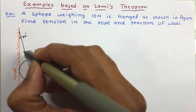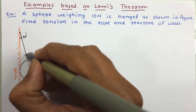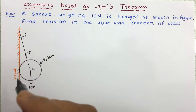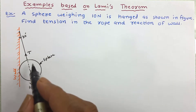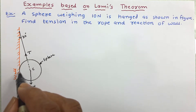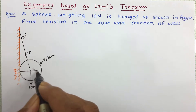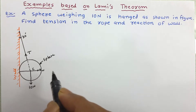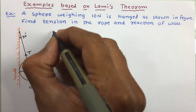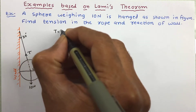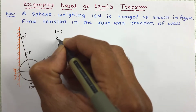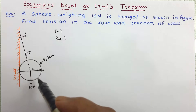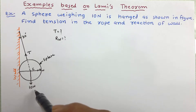We need to work out the tension in the rope and reaction of the wall. The weight of the sphere is 10 Newton, so the first force acting is 10 Newton in the downward direction. In the rope there will be tension, so we will mark tension here. Due to the wall, there will be a reaction in the direction perpendicular to the wall, so this will be reaction of wall Rw.